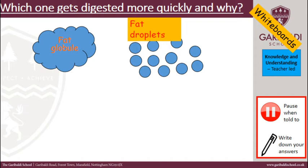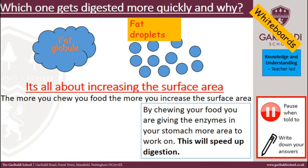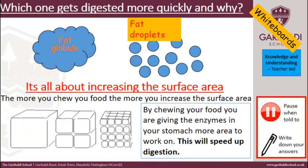If you said fat droplets, you are correct. Why? Because it's all about increasing surface area. The more you chew your food, the more you increase the surface area. When you increase the surface area, you are giving the enzymes in your stomach more area of the food to work on — this speeds up digestion. So if you just eat a whole grape, digestion will be slower than if you chewed it and broke it down into smaller pieces, therefore increasing the surface area.